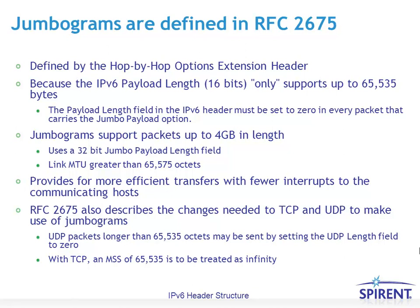One particularly interesting hop-by-hop option extension header is jumbograms, specified in RFC 2675. The IPv6 payload length is 16 bits, allowing up to 65,000 bytes in an IPv6 packet. However, if we want to send packets larger than that, the payload length in the IPv6 header is set to 0 to indicate it carries a jumbo payload option. That allows jumbograms to support up to 4 gigabytes in length, because it uses a 32-bit jumbo payload length field. Of course, you need link MTUs that support that end-to-end, and it provides more efficient transfer of data with fewer interrupts to the communication host.